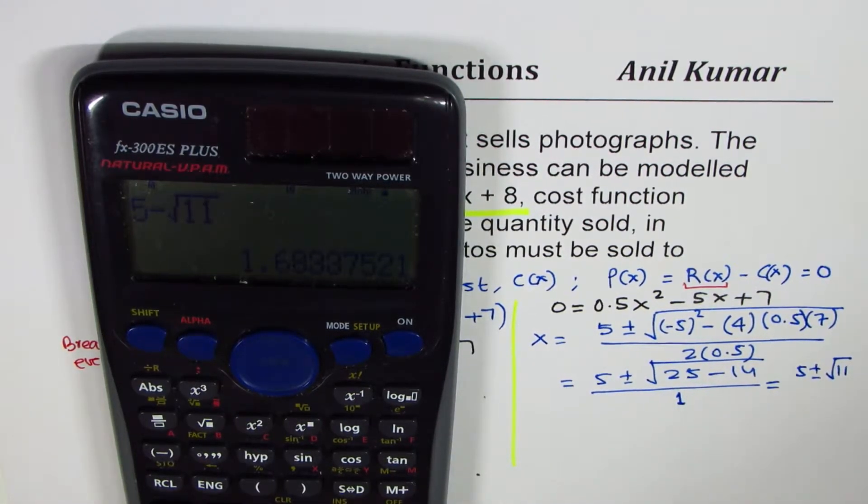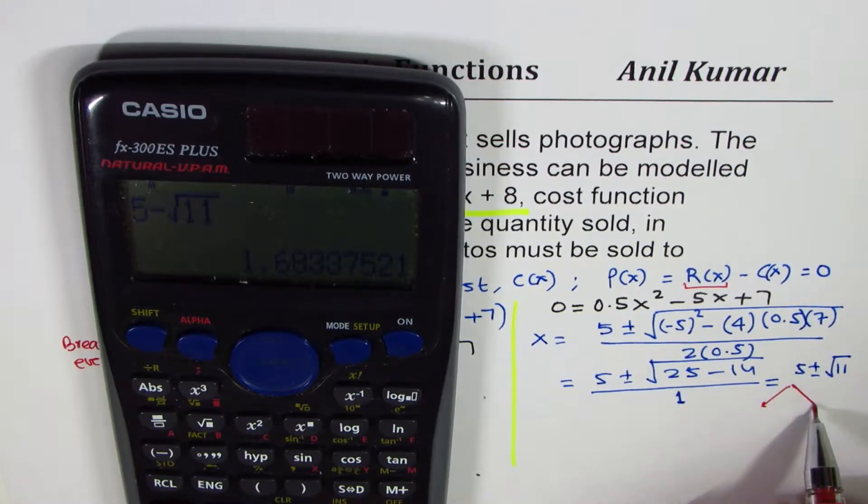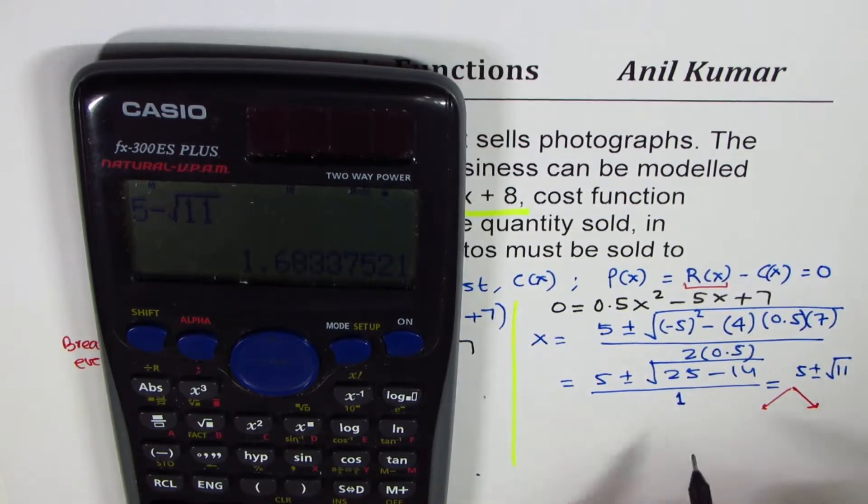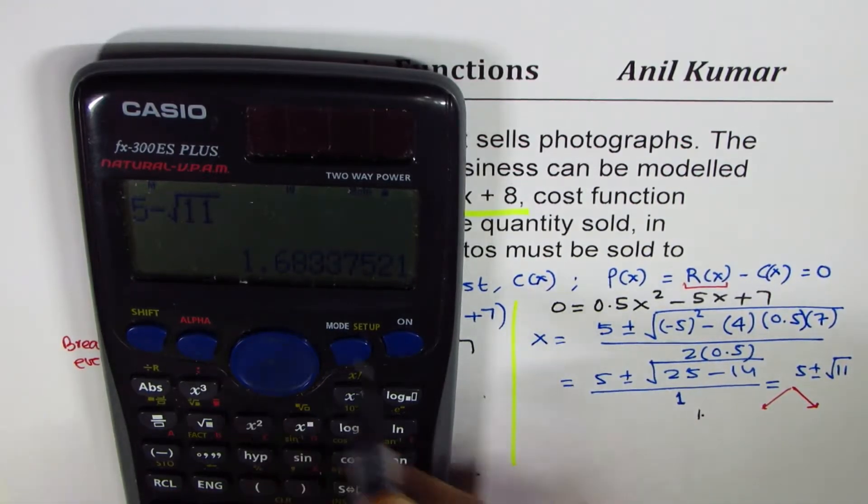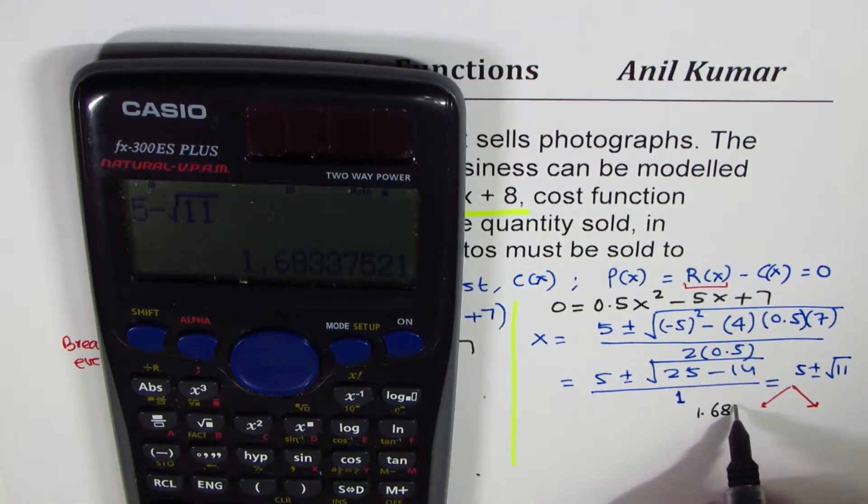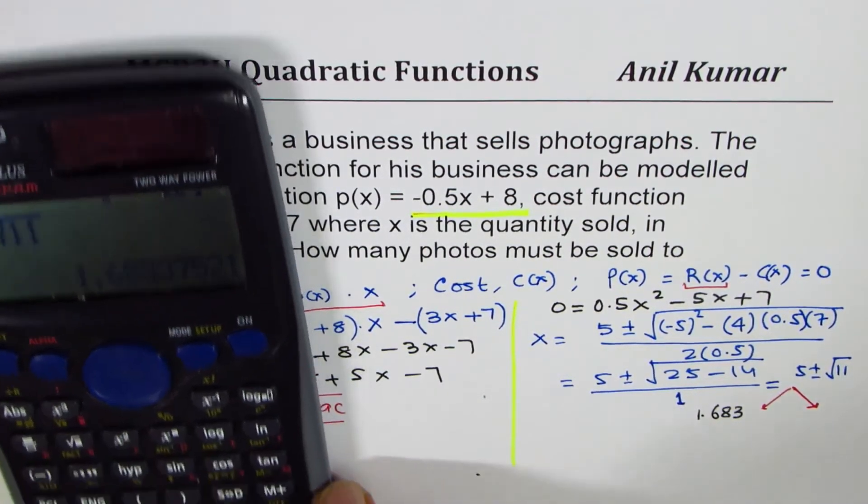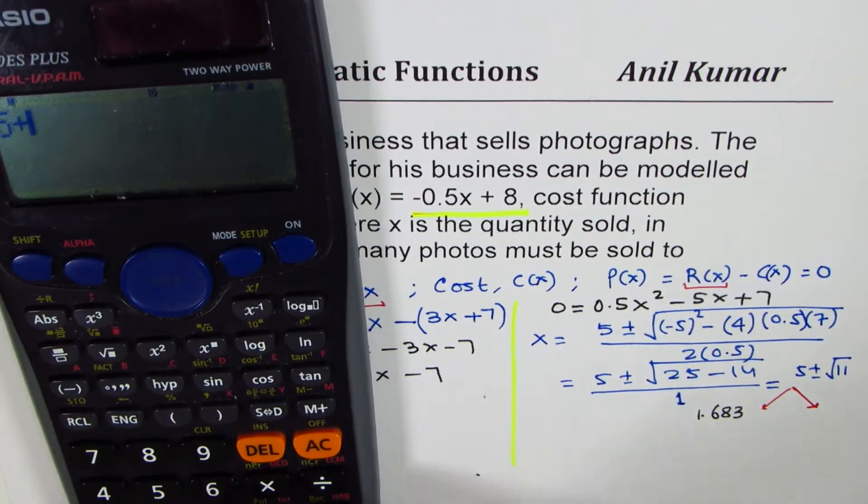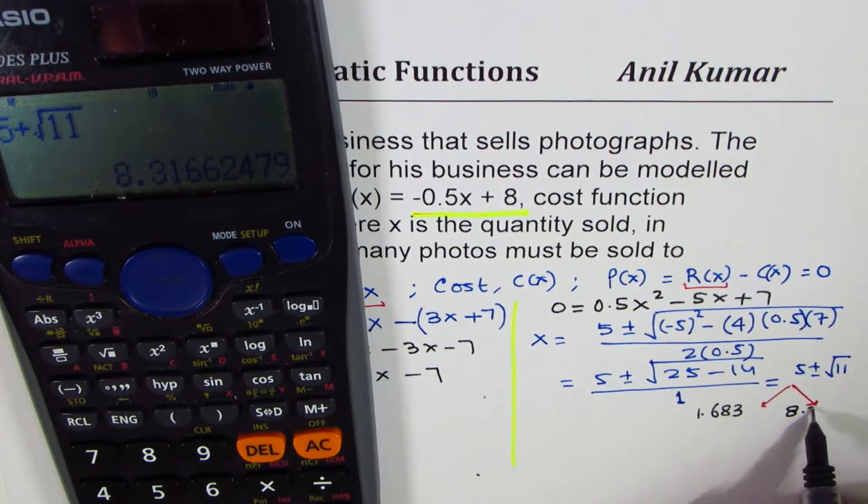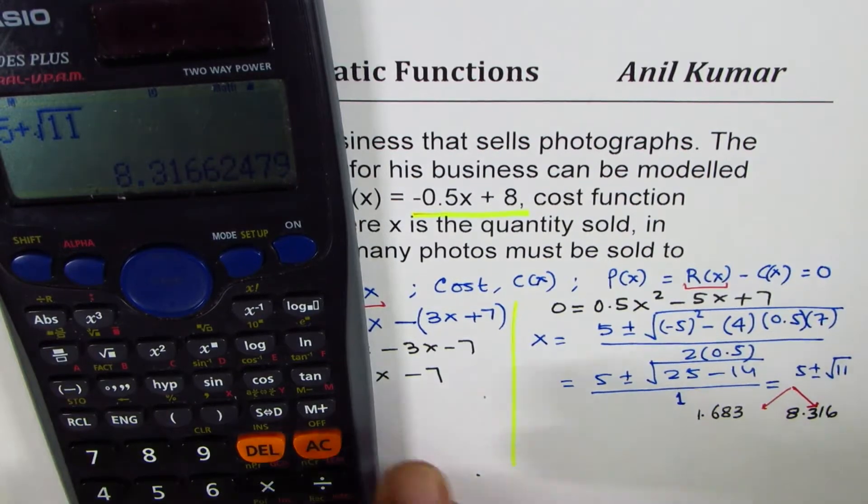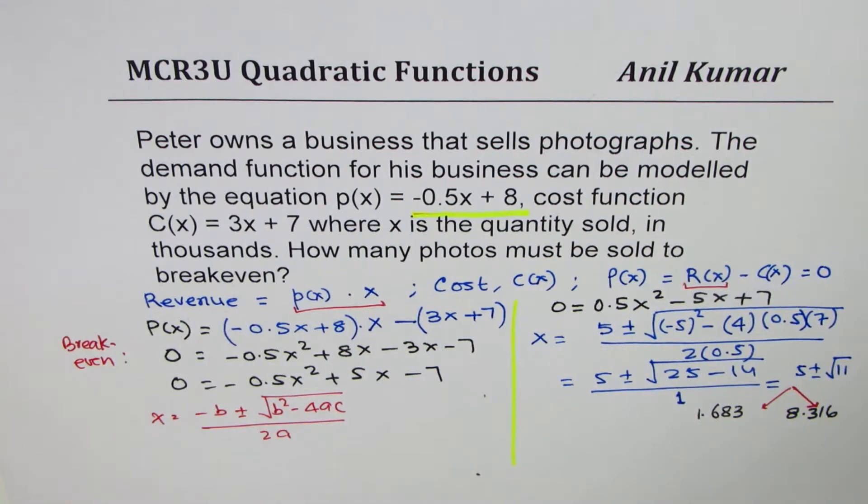So what do we have here is 5 minus square root of 11, which equals to 1.6833. So one answer is, so there are two solutions to this. So one could be 1.6833. Since the quantities are given in thousands, I'm taking three decimal places. The other could be 5 plus square root 11, which is 8.316. So we get two possible solutions in this particular case.